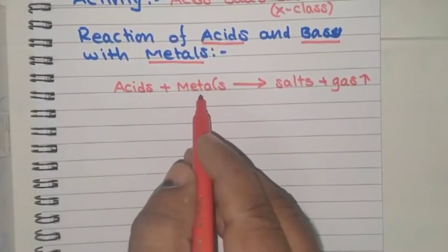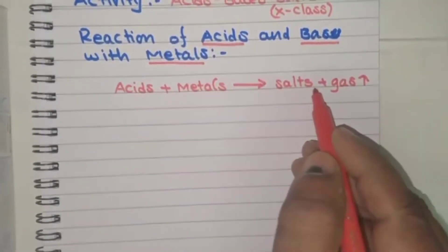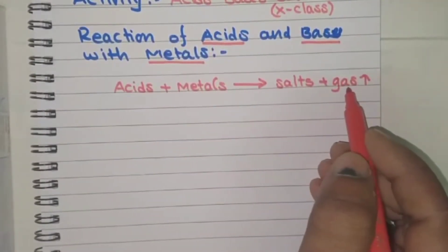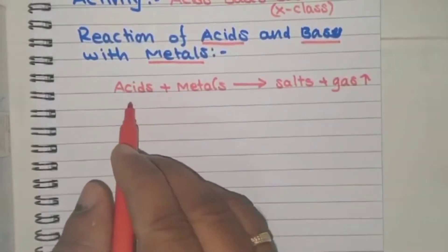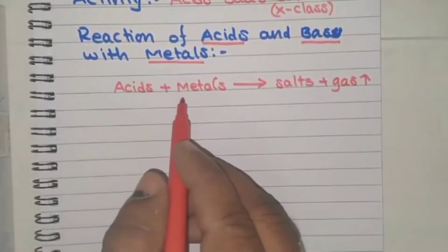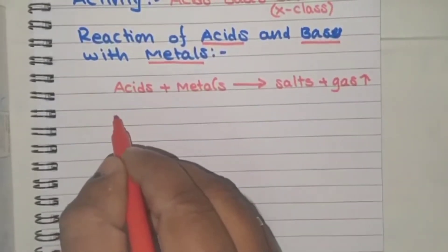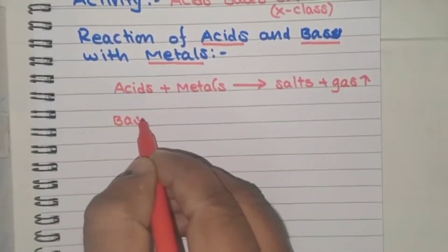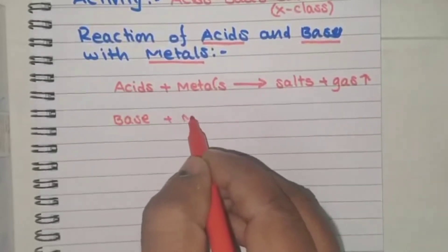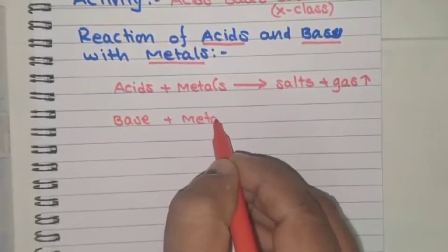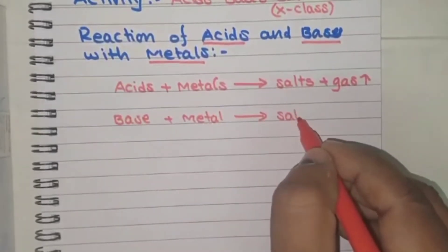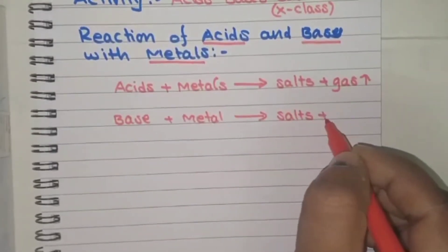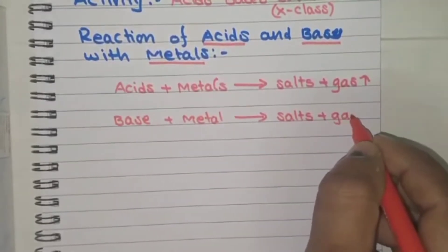I will repeat again: acid reacts with metal to form salt and gas. In this activity, bases also react with metal to form the same products, that is salt and gas.